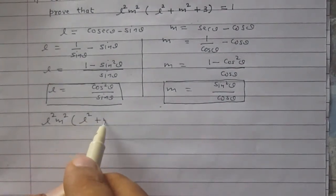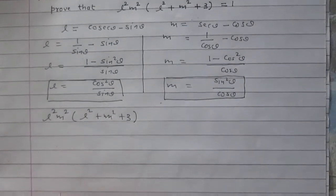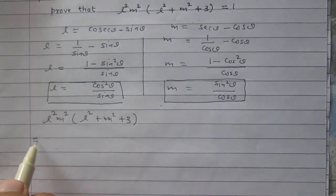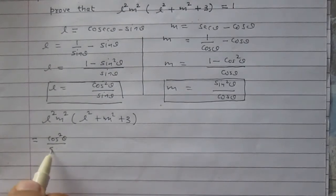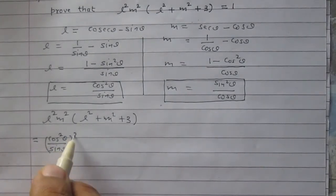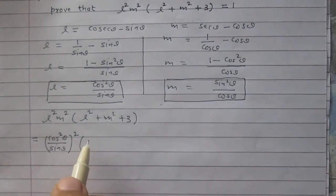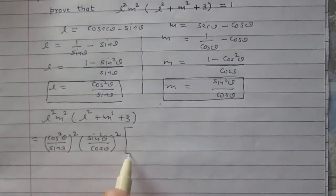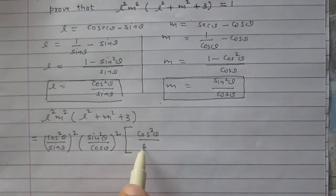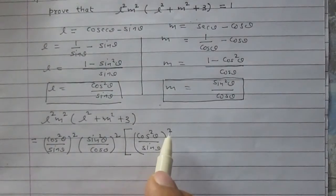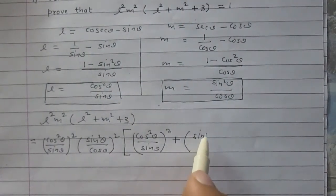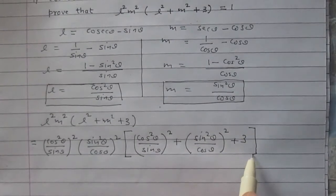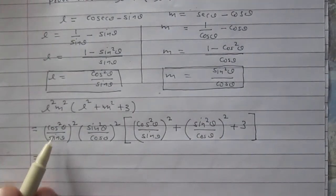Now consider the expression l squared times m squared times (l squared plus m squared plus 3). Substituting the values of l and m: l squared is (cos squared theta upon sine theta) squared, and m squared is (sine squared theta upon cos theta) squared.